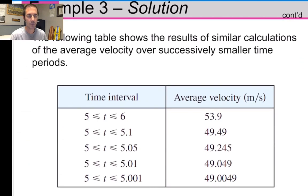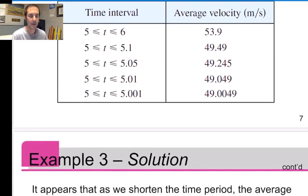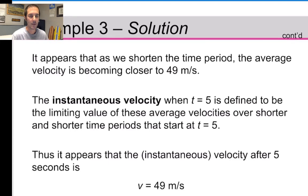If we look at different time intervals — for example, between 5 and 6 — the average velocity is calculated to be 53.9 meters per second. As we make the time interval smaller, keeping 5 as the desired point and squeezing the other endpoint closer and closer to 5, when we get down to 5.001, the average velocity is calculated to be 49.0049. So it looks like the instantaneous rate of change or velocity at time equals 5 would probably be 49 meters per second.